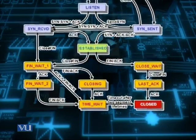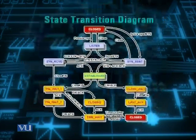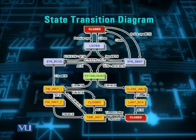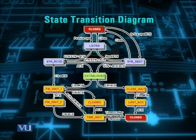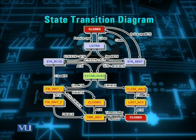TIME_WAIT state سب سے اہم state ہے — جو end connection close initiate کرے وہ ہمیشہ TIME_WAIT سے گزرتا ہے۔ TIME_WAIT state ensure کرتی ہے کہ اگر network میں کوئی delayed segment ہو جو بعد میں کسی نئی connection کو disrupt نہ کرے۔ یہ TCP state transition diagram TCP کی ایک state سے دوسری state میں movement کے لیے بہت اہم ہے۔